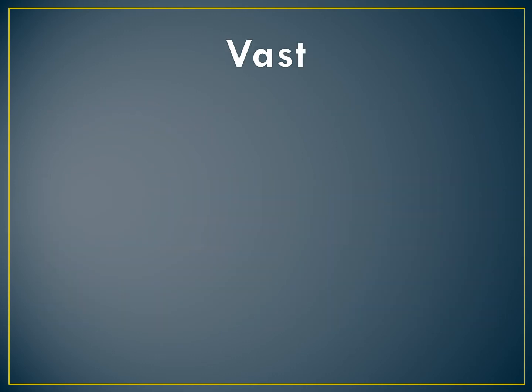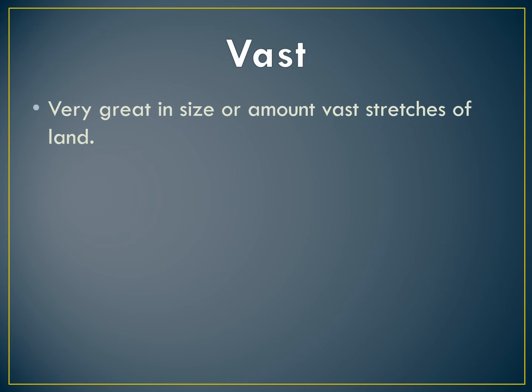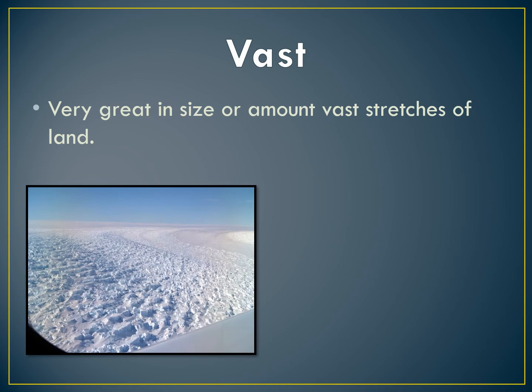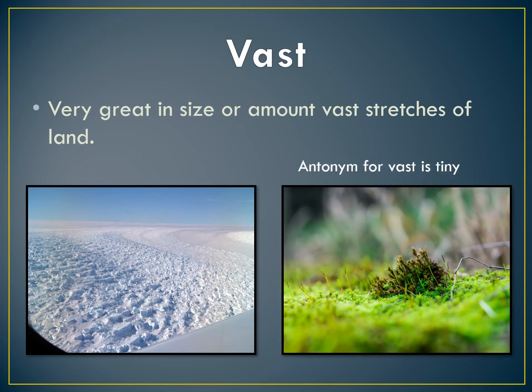The next word is vast — very great in size or amount, for example vast stretches of land. Look at the picture of vast ice — it's a great amount. The next picture is not vast. The antonym for vast is tiny — that's a tiny picture and you don't know how big the landscape is.